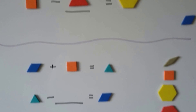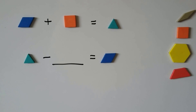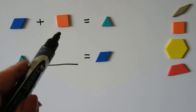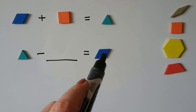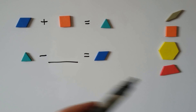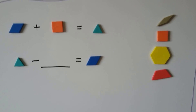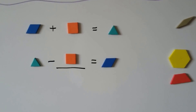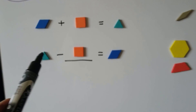Let's try it again. We have a blue rhombus, an orange square, and a green triangle. Now we have a green triangle and the blue rhombus — so what's missing? If you said the orange square, you're right. Related facts use three different numbers, so we have three different shapes: a rhombus, a square, and a triangle.